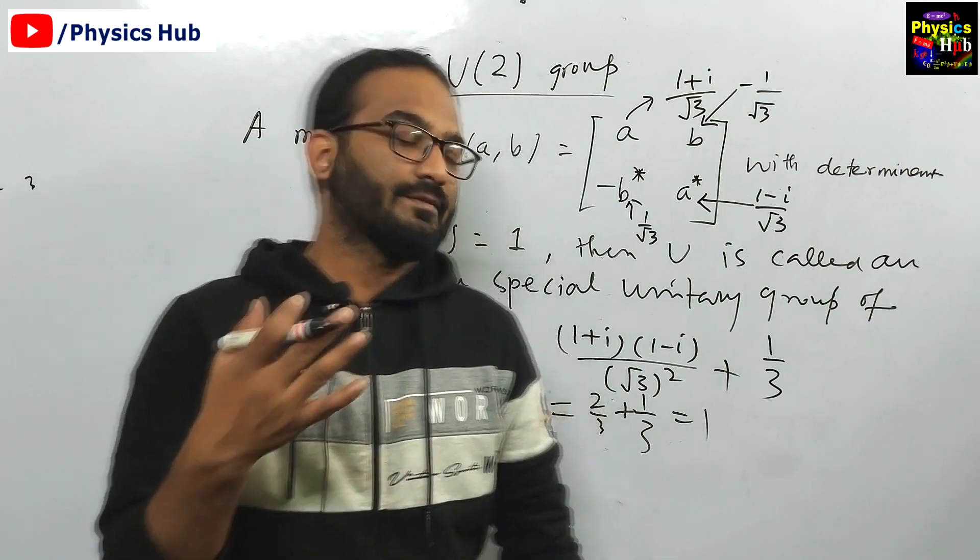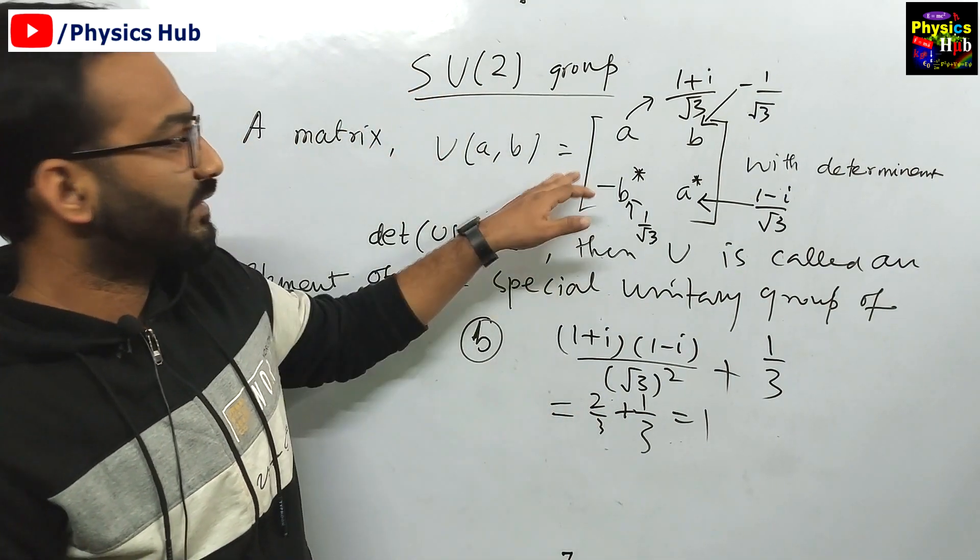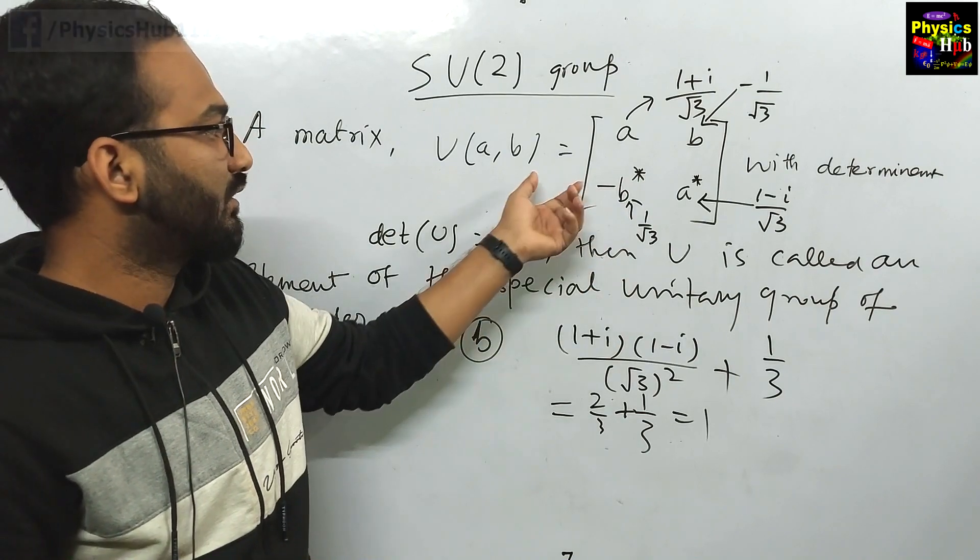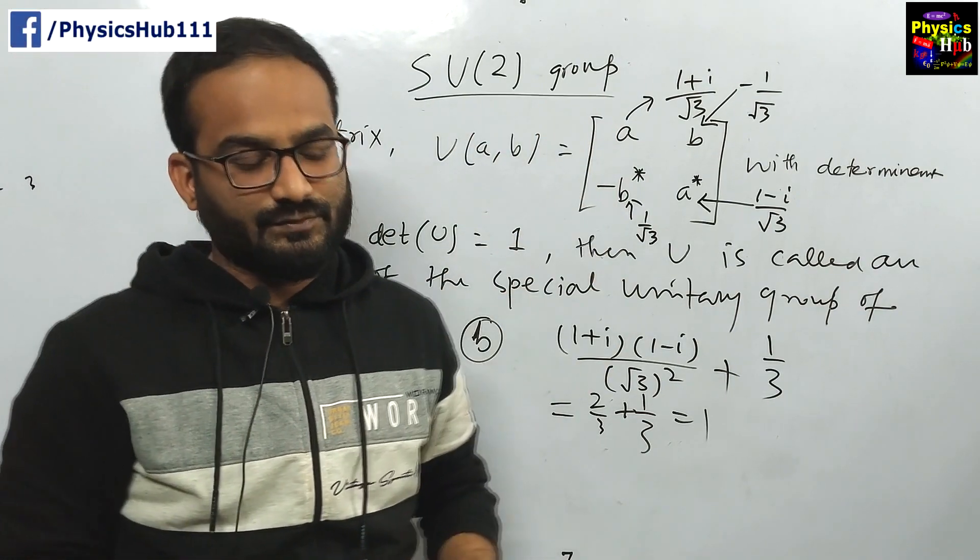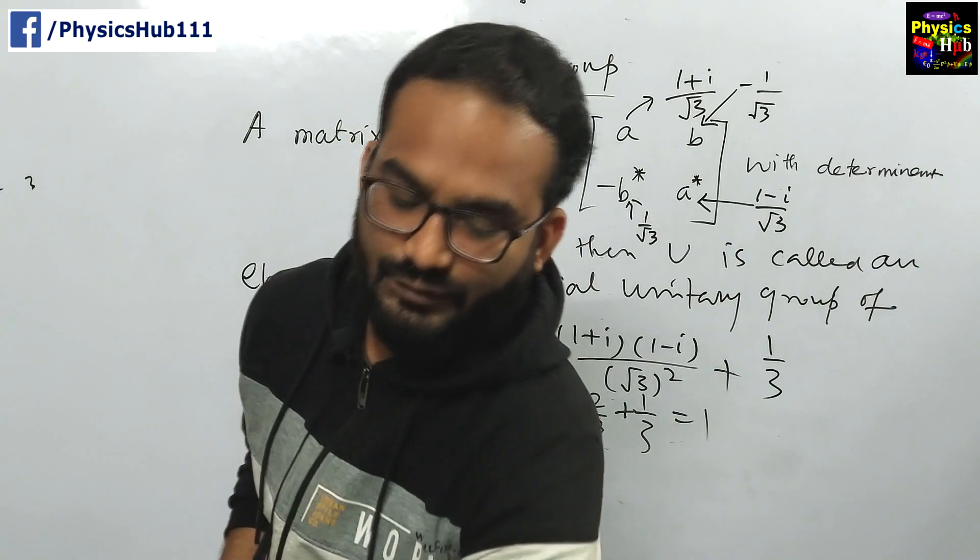So the matrix given in B is satisfying this condition. So we can say the option matrix B is the element of the SU(2) group. So option B is the correct option for this question. I hope you have understood this problem.